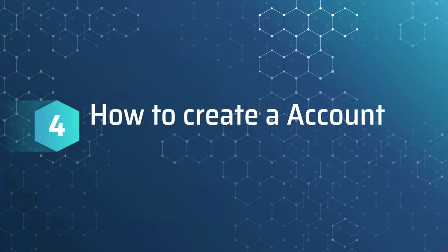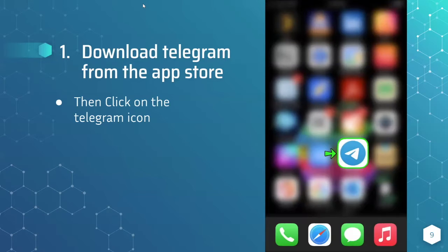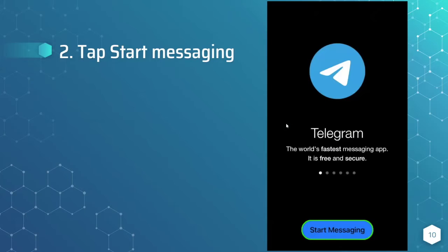How can you create an account? First, you would want to download Telegram from the App Store. You would then click on the Telegram icon, as you can see on the right-hand side. You should see a page like this pop up. Once you launch the app, you want to go ahead and tap on Start Messaging.